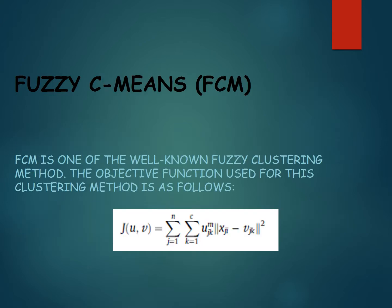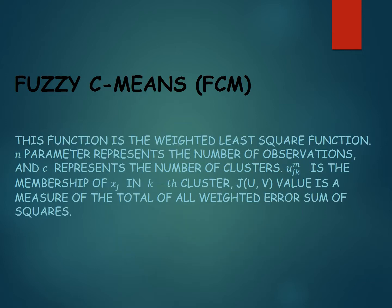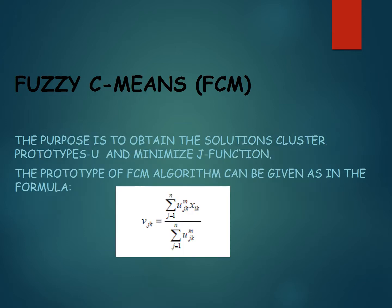Fuzzy C-means is one of the well-known fuzzy clustering methods. The objective function used for this clustering method is a weighted least square function, where N represents the number of observations, C the number of clusters, and U is the membership of X in cluster k. The G value is a measure of the total weighted error sum of squares, and the purpose is to obtain cluster prototypes U that minimize the G function.